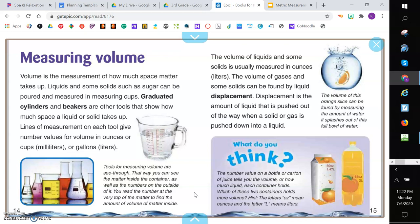The volume of gases and some solids can be found by liquid displacement. Displacement is the amount of liquid that is pushed out of the way when a solid or gas is pushed down into a liquid. And over here our caption states, Tools for measuring volume are see-through. That way you can see the matter inside the container, as well as the numbers on the outside of it. You read the number at the very top of the matter to find the amount of matter inside. This caption, the volume of this orange slice can be found by measuring the amount of water it splashes out of the full bowl of water.